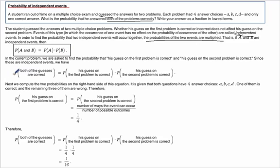So in this case, we're trying to figure out what's the chance or the probability that he gets both correct. Well, it's going to be his probability of the first one times the probability of his second one.